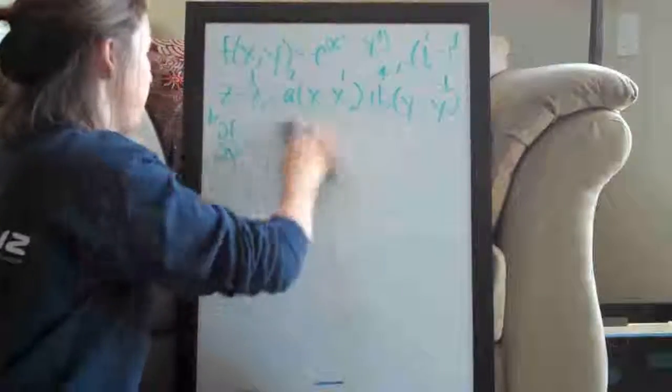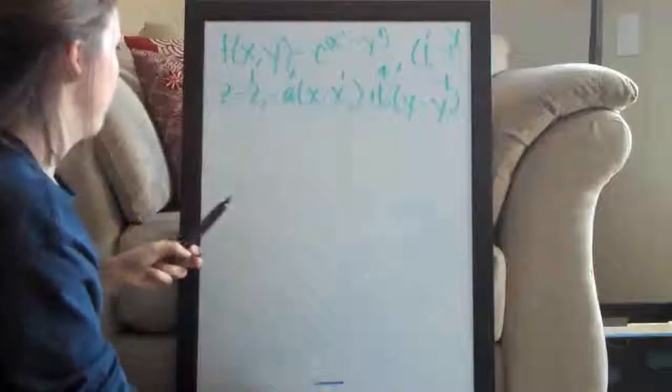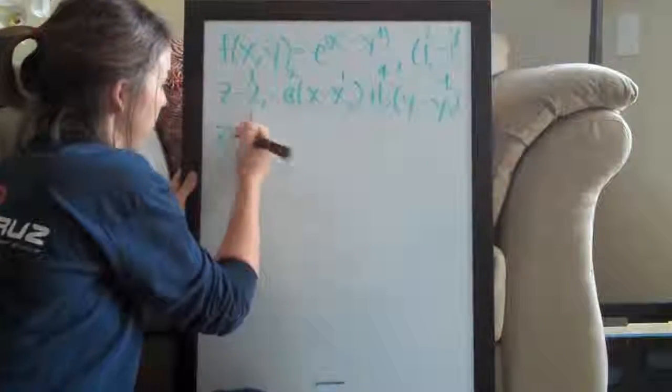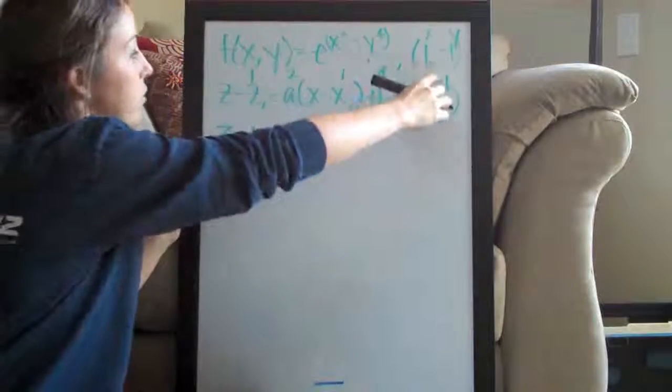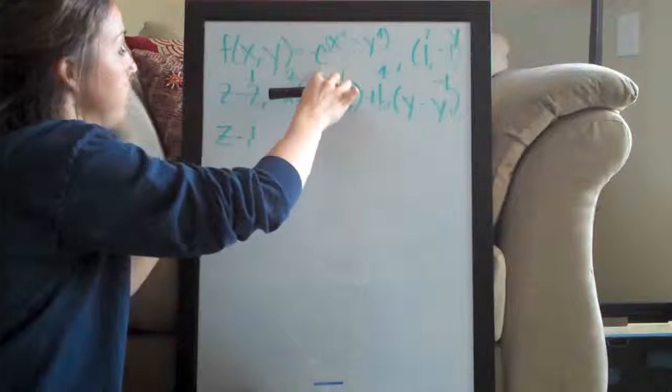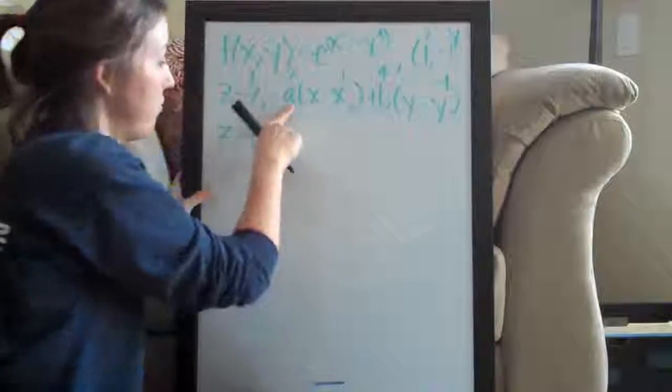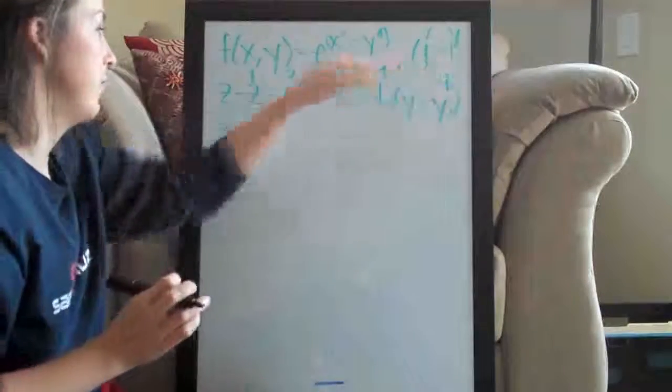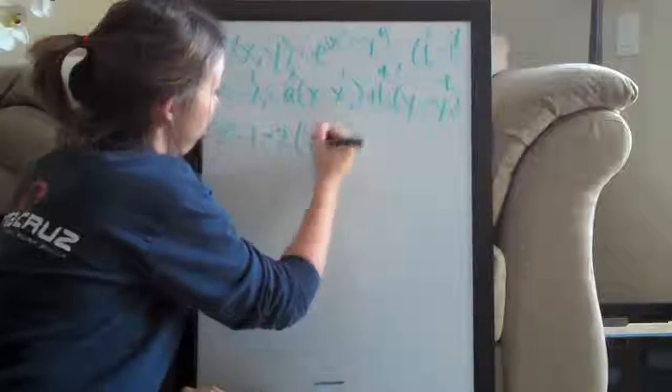So now our final step is to write this whole equation out and simplify. So we have z minus 1. Remember, we plugged in the point to the original function for z1 and we got 1. We solved for slope in the x direction by taking the partial derivative with respect to x and then plugging in the point to get a, which was 2. And remember, we're leaving z, x and y intact.